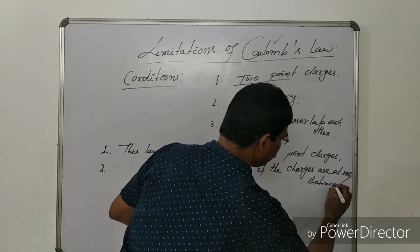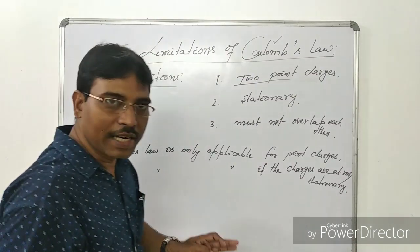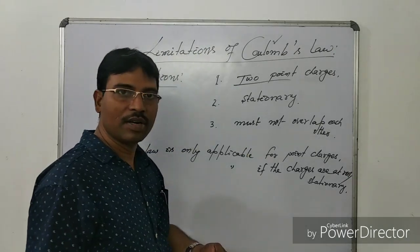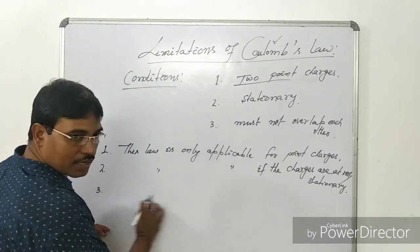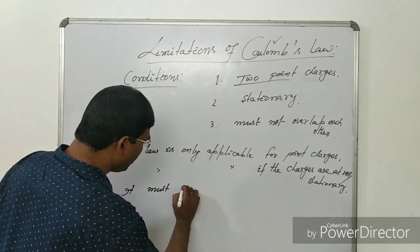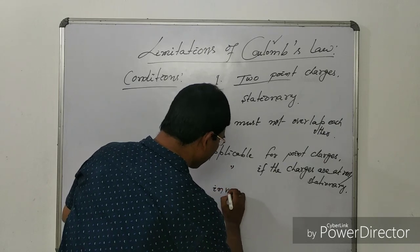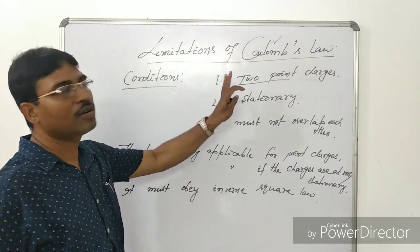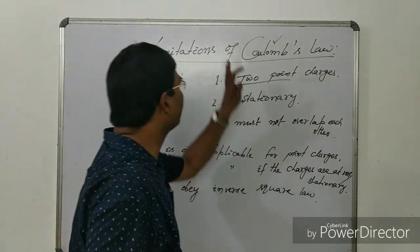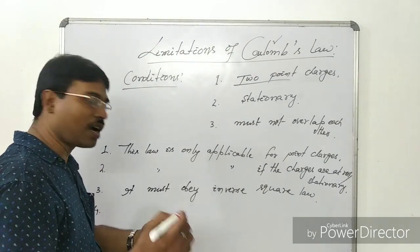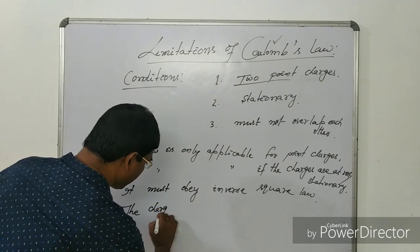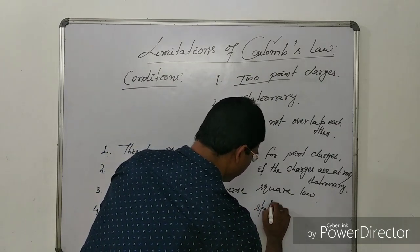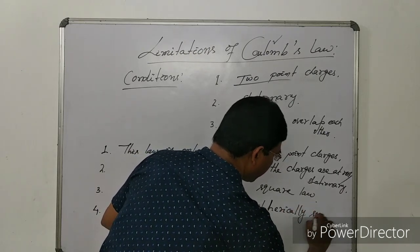The third limitation: the two charges that produce an electric force — either attractive or repulsive — must obey the inverse square law. Additionally, the charges must have a spherically symmetric distribution.